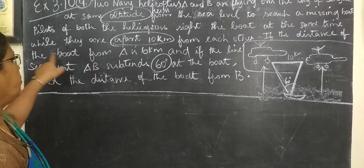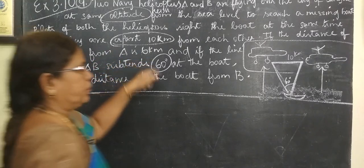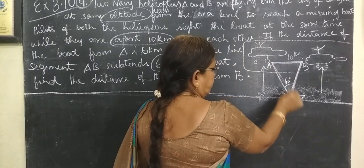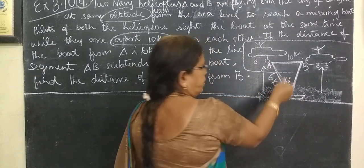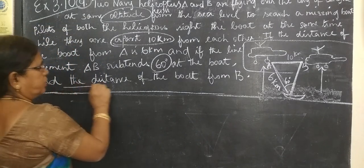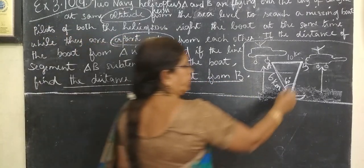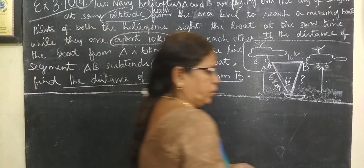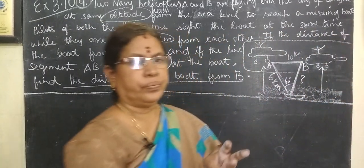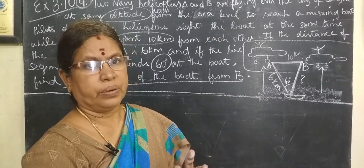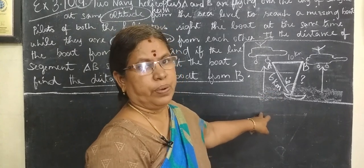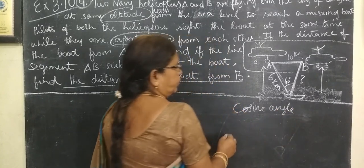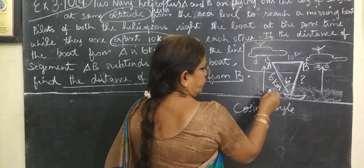The distance of the boat from helicopter A is 6 km. We want to find the distance of the boat from B. Here we are using the cosine formula.